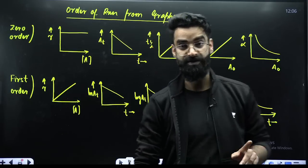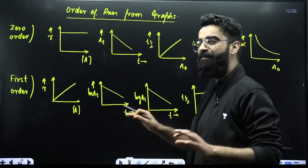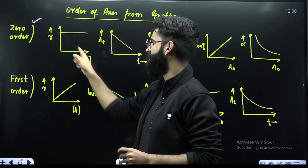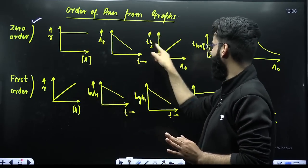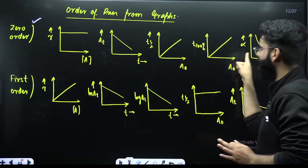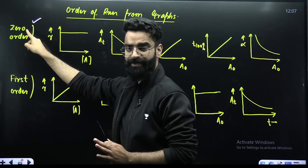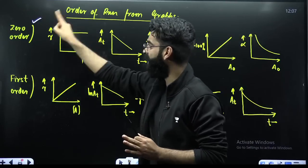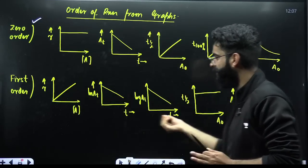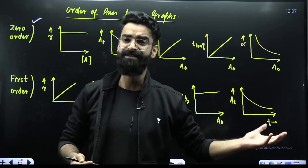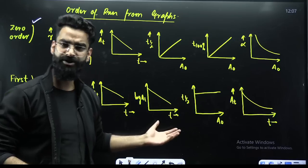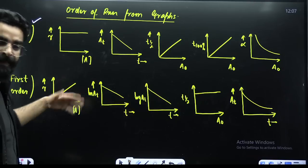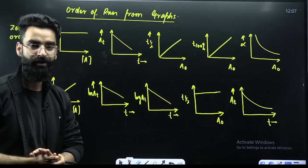One more type of question: you are given a graph and must identify the order of the reaction. For zero order reactions, key graphs include A(t) versus t, t-half versus A-naught, completion time versus A-naught, and alpha versus A-naught. For first order reactions, there is a separate set of graphs. By knowing the type of graph shown, you can directly determine the order of the reaction.